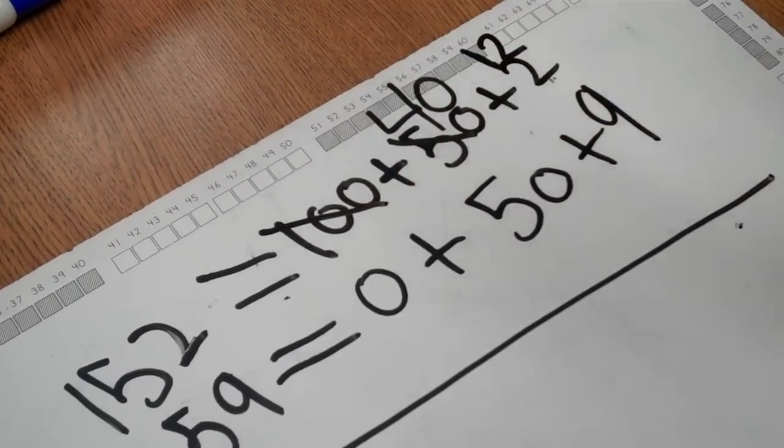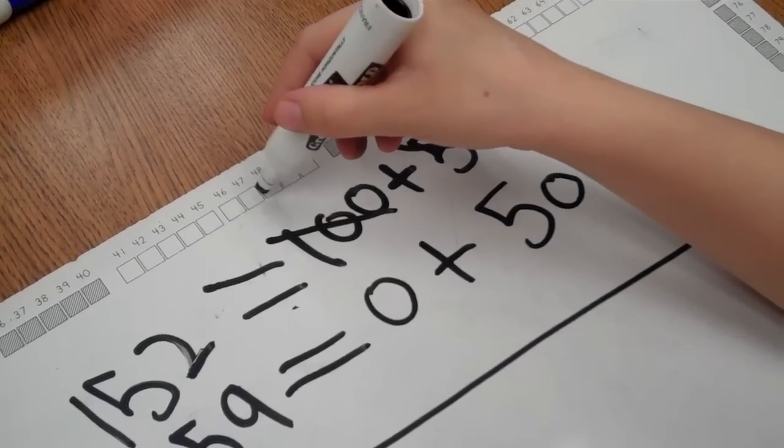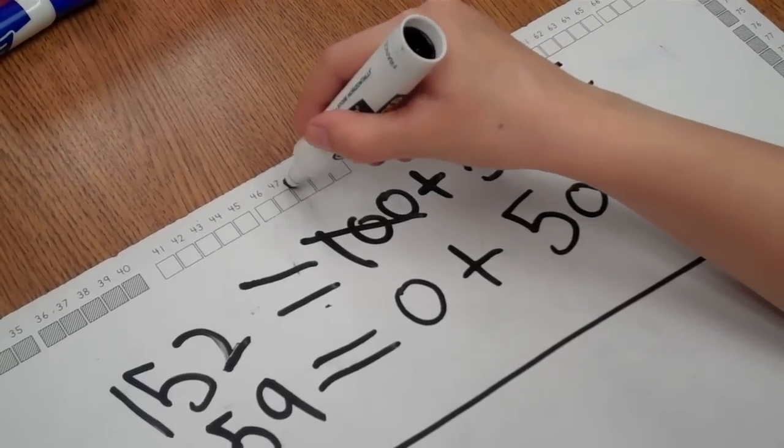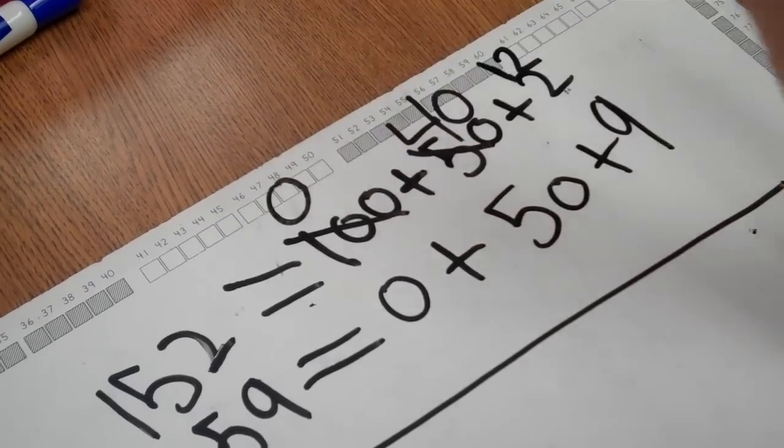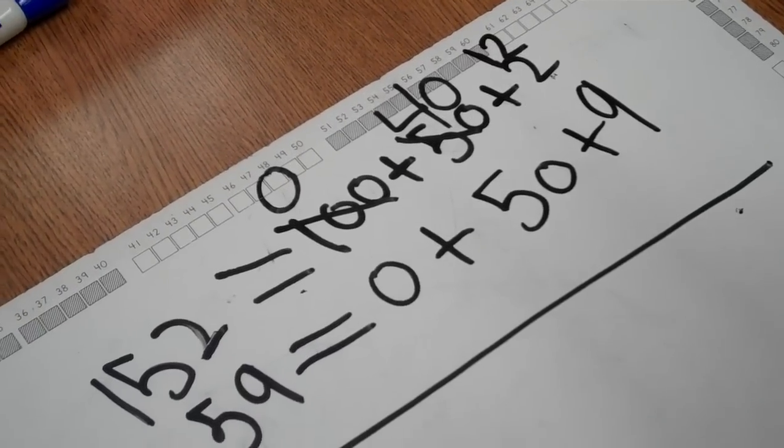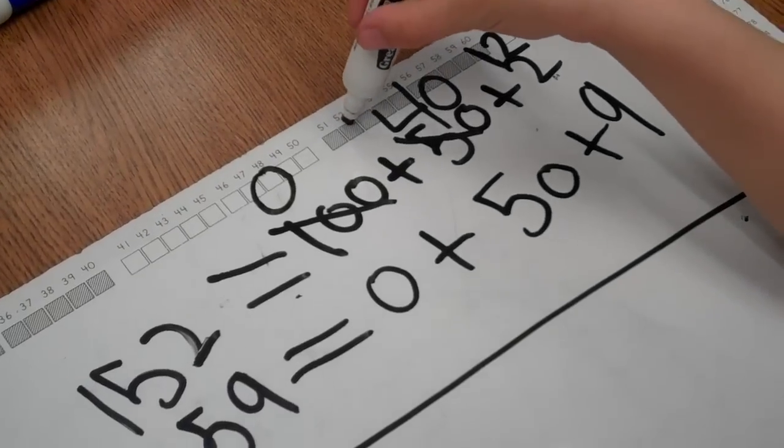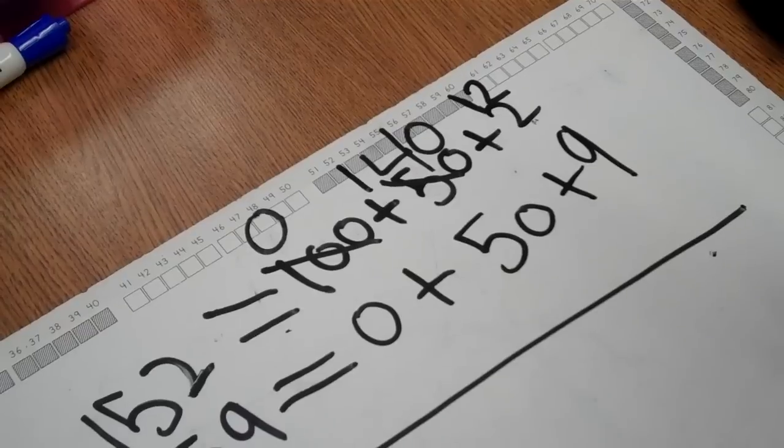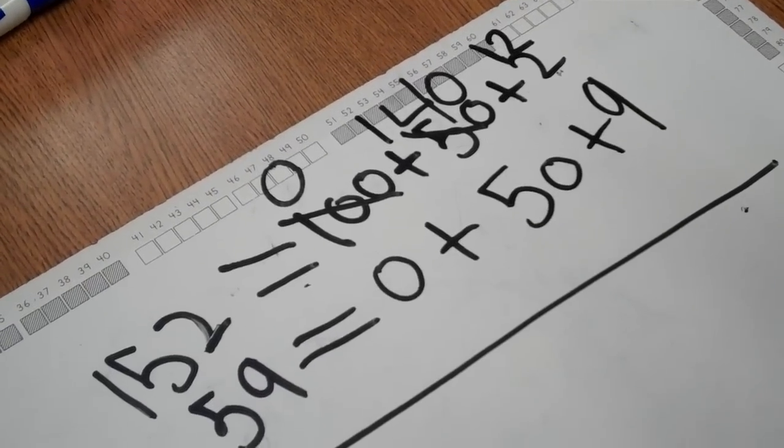Now we need to look and see 40 minus 50. We'll need to ungroup 100. We'll break our 100 apart and we'll get 10 tens. Now we have 0 hundreds. 10 tens plus 4 tens equals 14 tens or 140. Now students are able to do the subtracting and they're able to work from the left or the right.